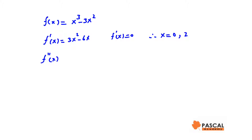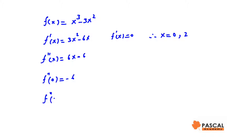The second derivative f double prime of x is 6x minus 6. Evaluating: f double prime at 0 is negative 6, and f double prime at 2 is positive 6. Therefore, the point (0, 0) is a local maximum.